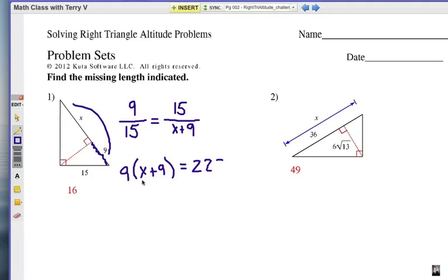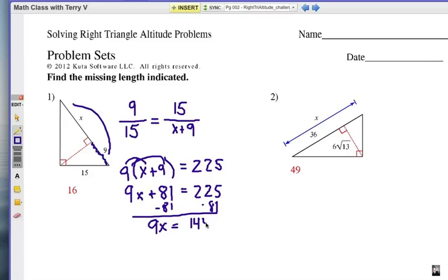Use the distributive property to multiply this out: 9 times x and 9 times 9. Then it's a simple matter of a two-step equation. We're going to subtract 81 from each side.